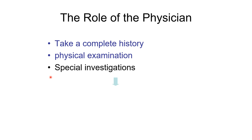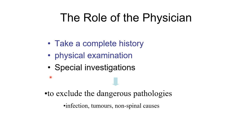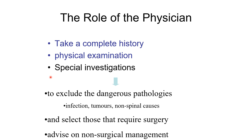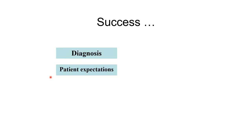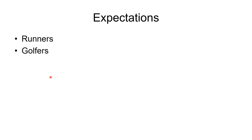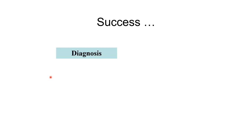Once we've done a complete history, physical examination, and special investigations, and excluded dangerous pathologies, we can select a few patients that require surgery and advise the others on non-surgical management. We need to adapt to or meet patient expectations — problem areas would be those that want to go back to running when they have degenerative back pain, or play golf, and one has to be sensible about this and not simply operate on these people if they need to adapt their lifestyles.